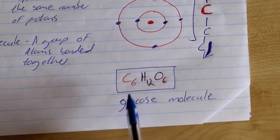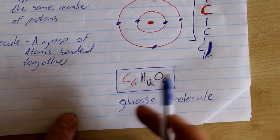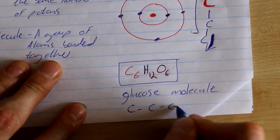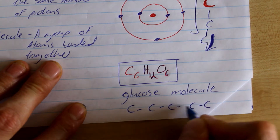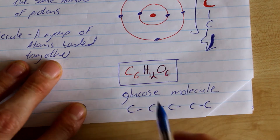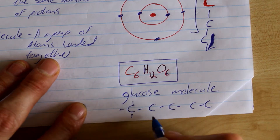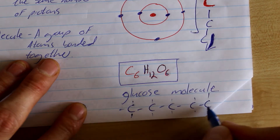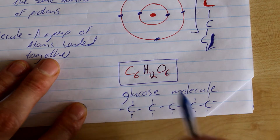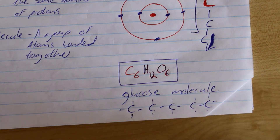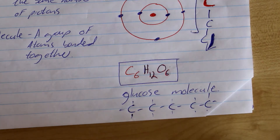The glucose molecule is made up of six carbon atoms joined together — one, two, three, four, five, six. It has 12 hydrogens attached, and the hydrogens attach to our molecule along with six oxygen molecules. That is just some background info on atoms, elements, and molecules.